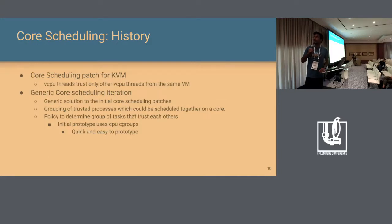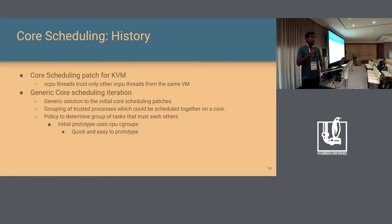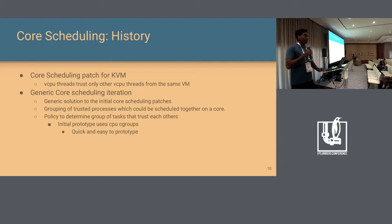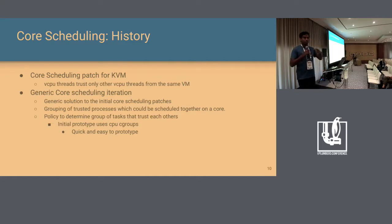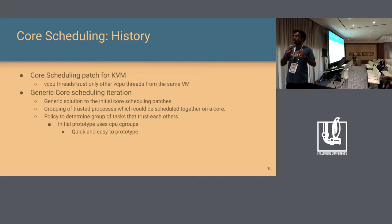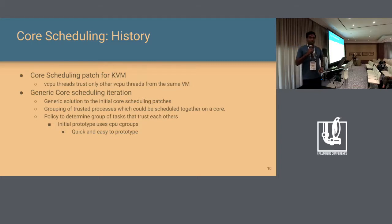The very first implementation was VM-specific, targeting KVM. The trust boundary was defined so that only vCPU threads from the same VM could be trusted together. When a vCPU thread became runnable, if there was no vCPU thread from the same VM on the other sibling, that sibling was forced idle. Then came the generic core scheduling iteration, where instead of vCPU threads, processes are grouped as a trusted boundary. You can group a list of processes into a single trusted group and make it core-schedulable.